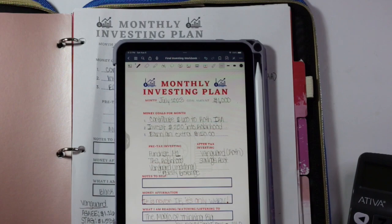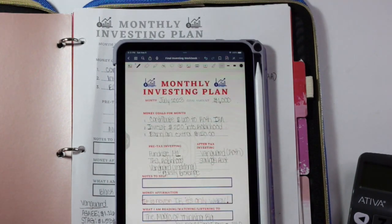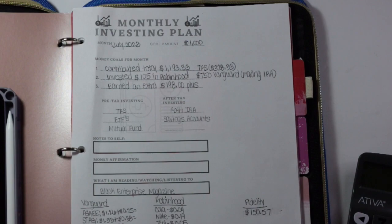This is the July investing recap. I had down that I wanted to contribute $600 to my Roth IRA, I wanted to invest $250 into Robinhood, and then also I wanted to earn an extra $150. In total, I contributed $1,193.33.